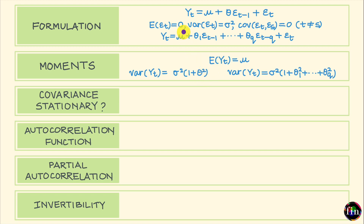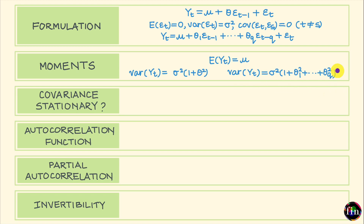Moving on to MAQ, the expected value of Yt is mu, and the variance of Yt is sigma squared plus theta 1 squared times sigma squared plus theta 2 squared times sigma squared, all the way to theta Q squared times sigma squared. This is the variance of Yt when it follows the MAQ process.